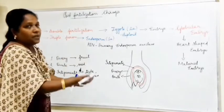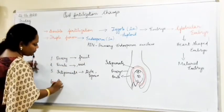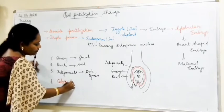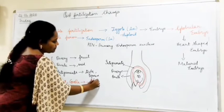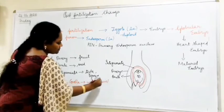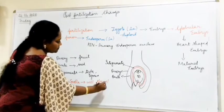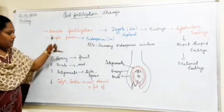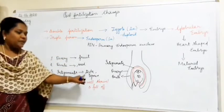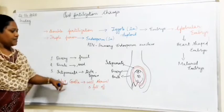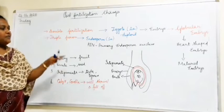Other than that, the calyx and corolla will also shrivel and fall off. So, to summarize the post-fertilization changes: ovary develops into fruit, ovule develops into seed, integuments develop into testa and tegmen, and calyx and corolla shrivel and fall off.